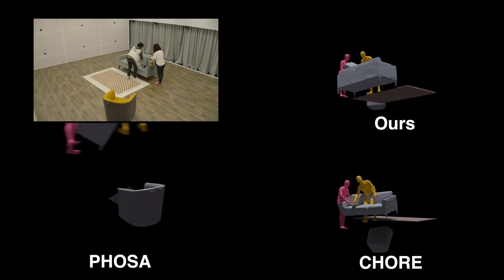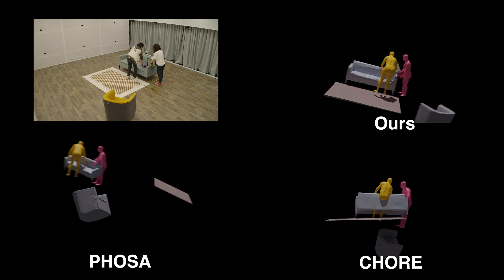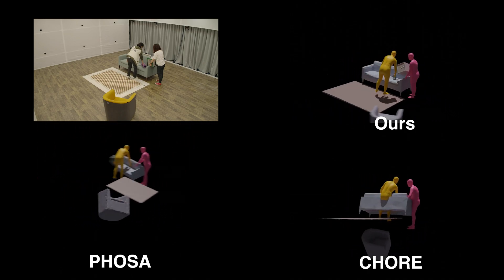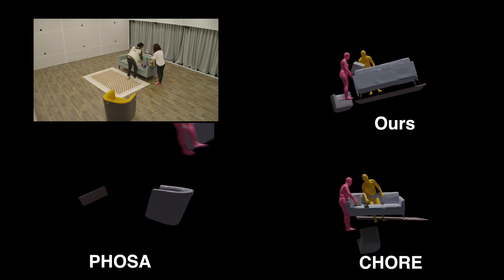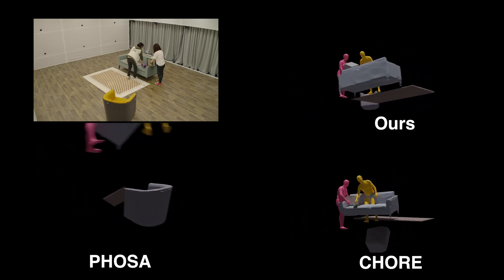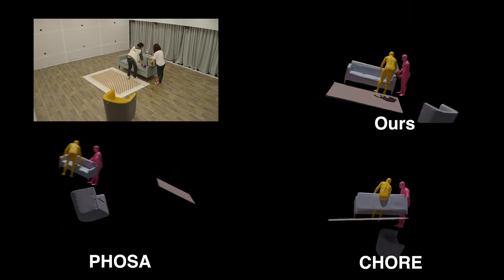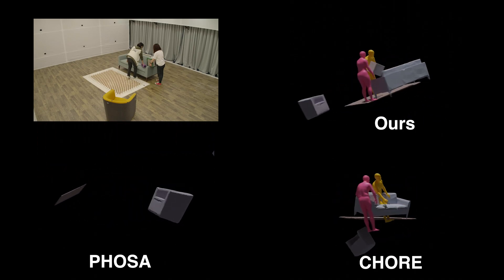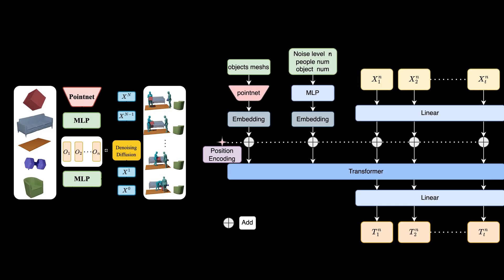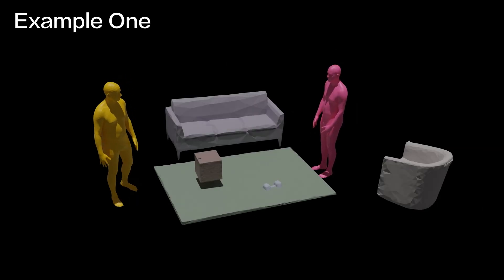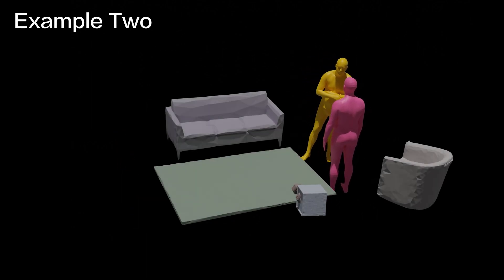To evaluate the proposed monocular multiple HOI capturing method on the dataset, we compare the evaluation results with two state-of-the-art single HOI capturing methods, FOSA and CHOR. We further evaluate how our dataset contributes to the generation task. We meticulously designed a diffusion model for the generation of motions involving multiple people and objects, showing outcomes of two sequences within a living room environment with a predefined configuration of two persons and five objects.